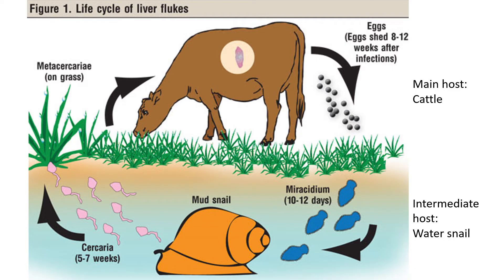The second stage is the miracidium stage — you need to recognize this word because exams may ask which parasite has the miracidium stage; the answer is the liver fluke. The miracidium swims toward the mud snail, enters it, and matures inside. The next stage, called the cercaria, exits the snail and swims to grass near the water. The main host — cattle or sheep — then eats the grass and ingests the parasite. The cattle are the main host; the water snail is the intermediate host.